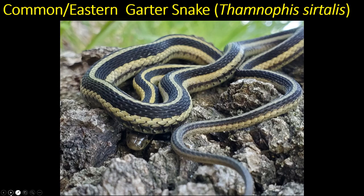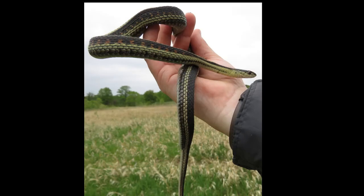Garter snakes typically have a black background color with yellow stripes — where the stripe is located is important in differentiating species. The eastern garter snake also tends to incorporate some color, and we start to see red or orange in some areas.